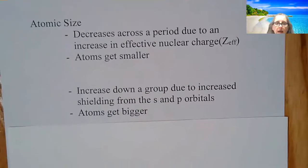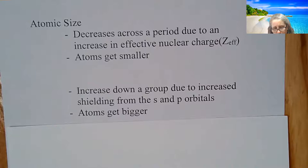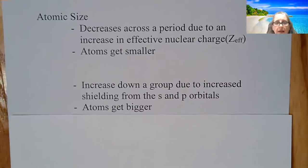Well, as you go down a group, you can't quite say the same, you can't use the effective, it doesn't work as well for our discussions. But you can say that as you keep going down a group, you get more and more S and P orbitals. So since you have that increase in S and P orbitals, those atoms are going to get bigger.